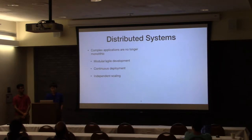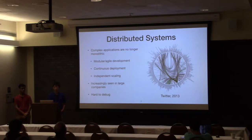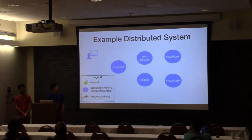However, you can see them increasingly in large companies like Twitter. The problem with them is that they're hard to debug since there are many small services that operate and depend on each other. So let's look at an example distributed system for something like web search.